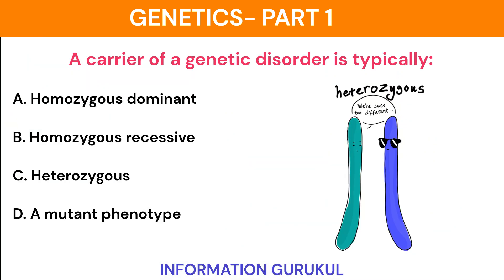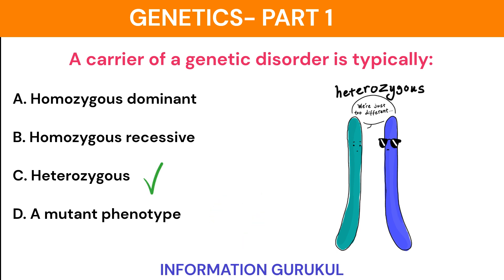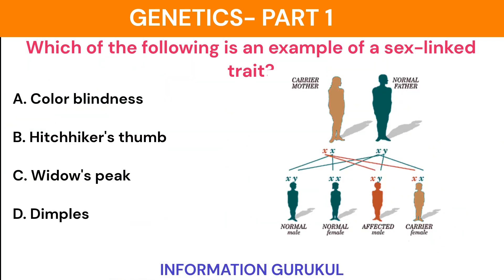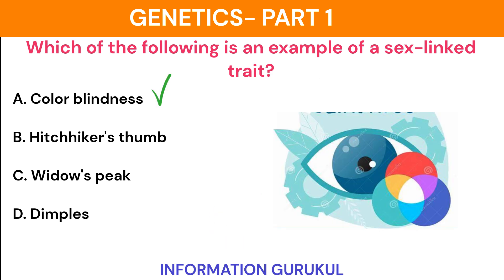A carrier of a genetic disorder is typically heterozygous. Which of the following is an example of a sex-linked trait? Color blindness.